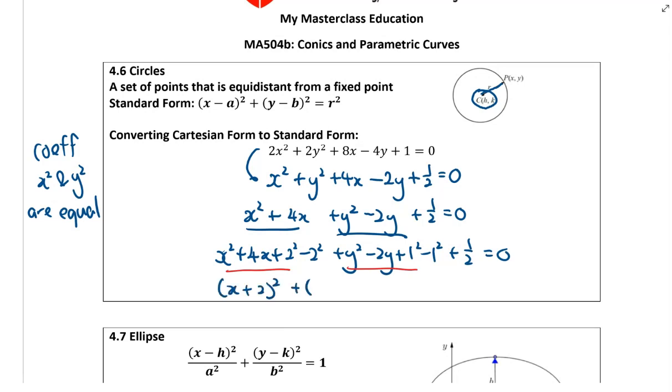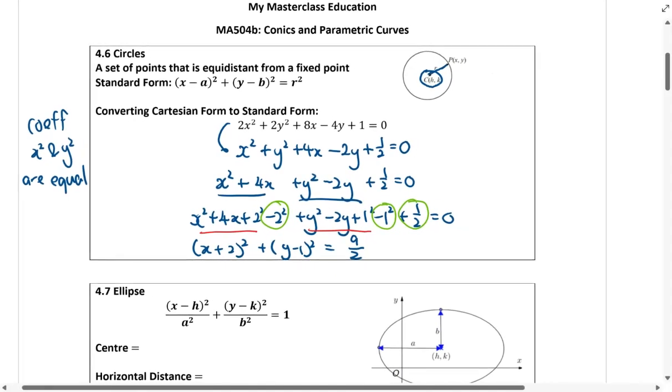It will become x plus 2 square plus y minus 1 square. The other constants like this, this and this, we move it to the right side and this will become 9 over 2.